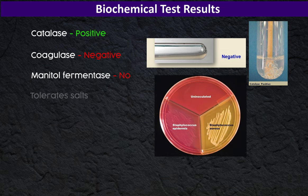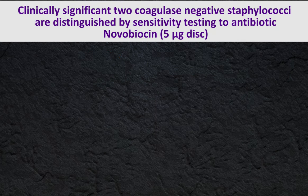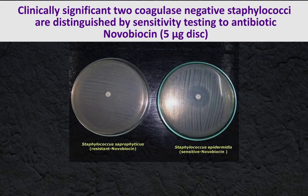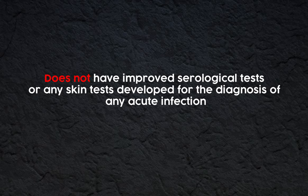S. epidermidis is catalase positive and coagulase negative, and does not ferment mannitol. It tolerates and survives in high antibiotic resistance conditions. Clinically significant coagulase negative staphylococci are distinguished by sensitivity testing to the antibiotic novobiocin. Using a 5 microgram disc, S. epidermidis is sensitive to novobiocin. There are no improved serological tests or any skin test developed for the diagnosis of acute infection.